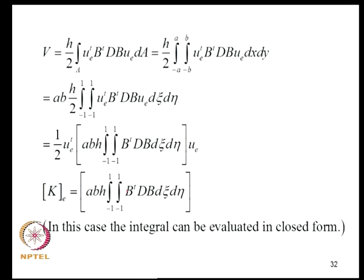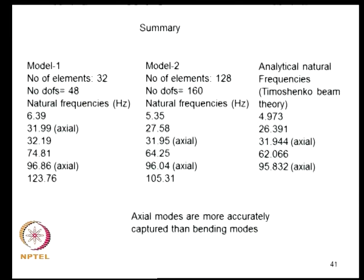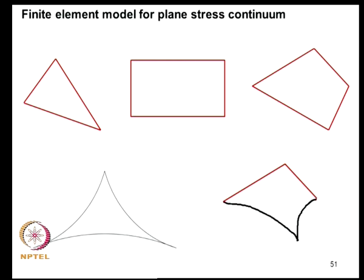Going back to the structure of stiffness and mass matrices, these integrals will now be with respect to natural coordinates xi and eta. Because of the nature of the transformations involved, the integrands will no longer be simple functions admitting closed-form solutions. We therefore use numerical integration schemes — specifically Gauss quadrature rules — to evaluate elements of K_E and M_E. In the next classes we will introduce the isoparametric formulation, derive mass and stiffness matrices for quadrilateral elements, and revisit these problems using quadrilateral elements.